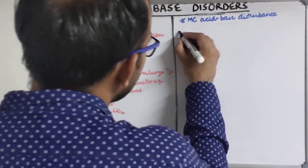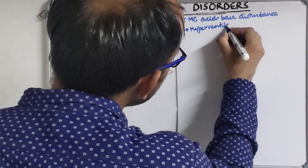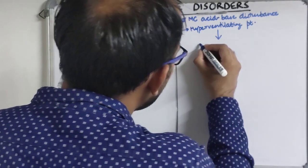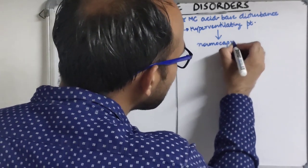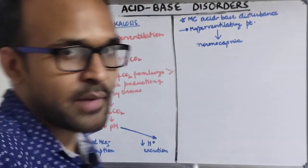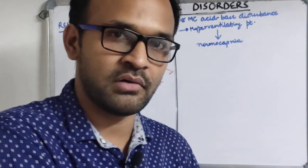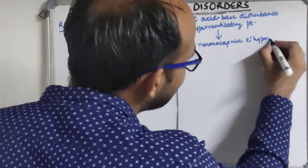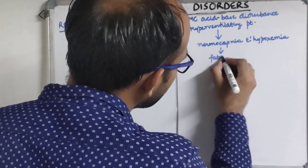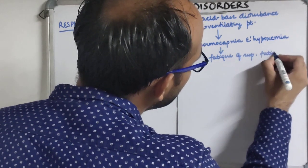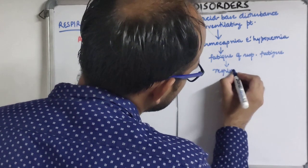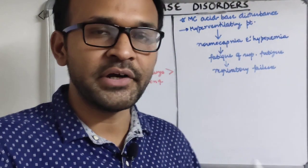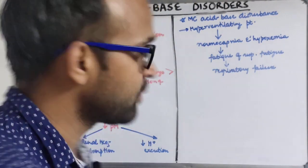As a result of hyperventilation, hypocapnia should occur. If instead you find normocapnia, it means the body is not able to wash out CO₂ properly — the patient is fatiguing with respiratory muscle fatigue, indicating high likelihood of going into rapid respiratory failure. This is the stage where the patient should be prophylactically put on mechanical ventilatory support.